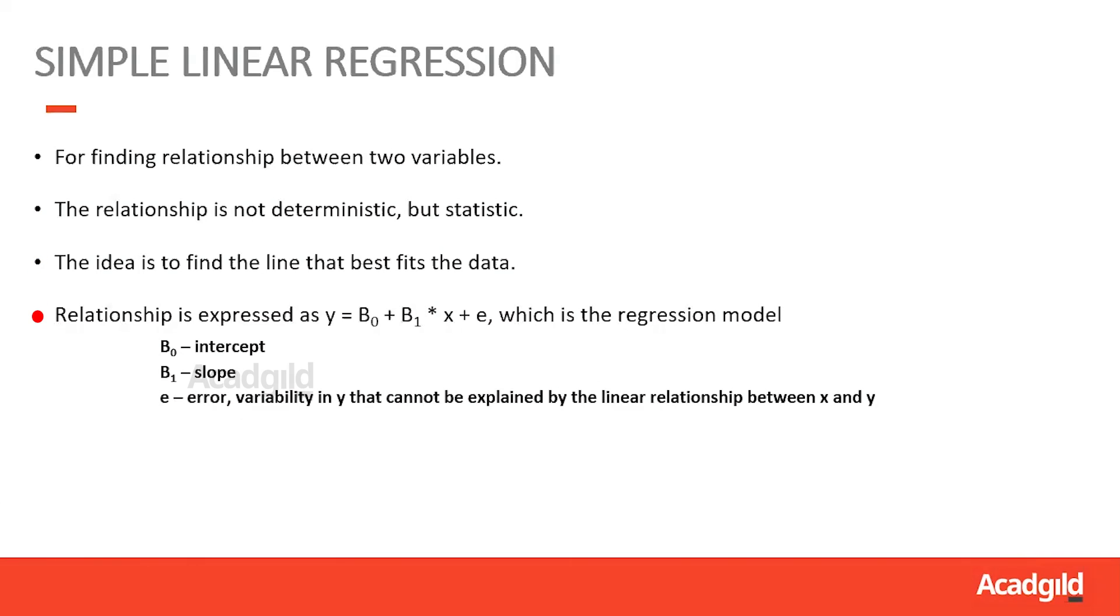The linear regression model is given by the equation y equals b0 plus b1x plus e, where b0 is the intercept, b1 is the slope of the line, and e is the variability in y which cannot be explained by the linear relationship between x and y.